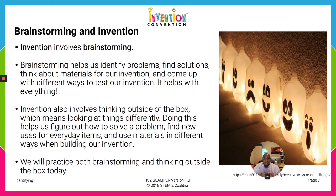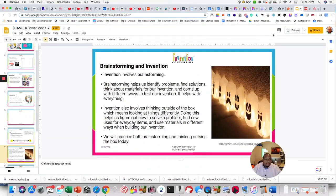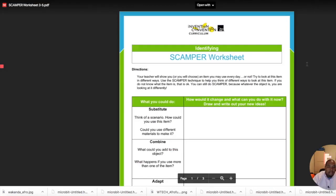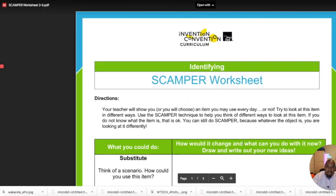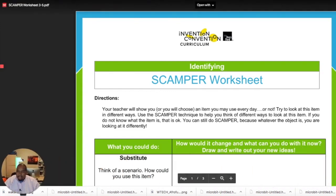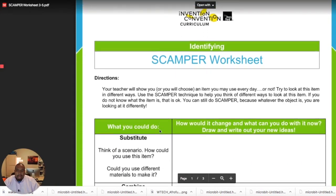That's actually what we're going to do in the next activity, which is called the SCAMPER activity. We're going to practice brainstorming using a process — a step-by-step guide — called SCAMPER. So let's take a look at that. Here is the worksheet that we're going to give you. Coaches, if you could pass out those worksheets after this video, this is what we're going to go through.